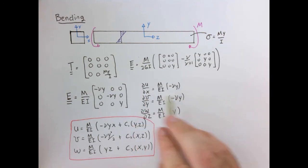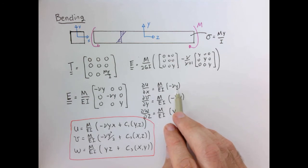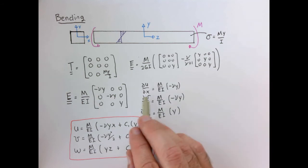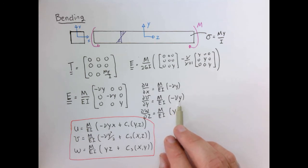Here are our final relationships from simply integrating. For the horizontal displacement, this term is a function of Y, so we pick up YX when we integrate with respect to X, but there could be some arbitrary function C1 which depends only upon Y and Z. For the vertical displacement, it depends upon Y, so when we integrate with respect to Y, we pick up Y²/2, and C2 could depend upon X and Z. Finally, the Z displacement W, we pick up YZ when we integrate with respect to Z, and C3 could be a function of XY.